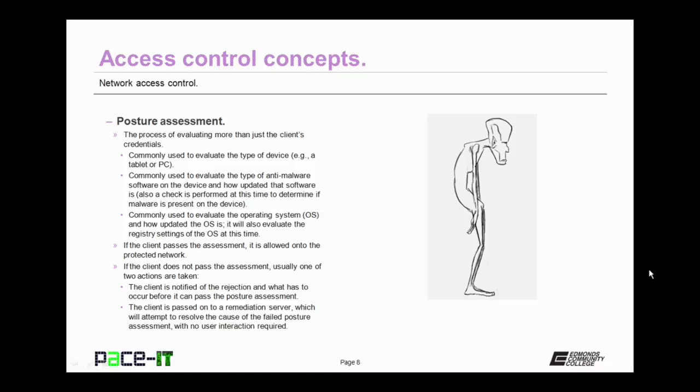Posture assessment is commonly used to evaluate the operating system as well, as in how updated that operating system is, and what the registry settings are at the time that access is being requested. If the client passes the assessment, it is allowed onto the protected network. If the client does not pass the assessment, usually one of two actions are taken.